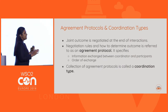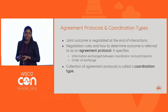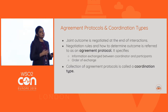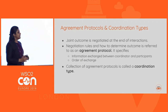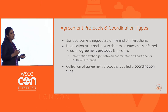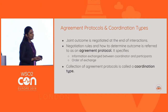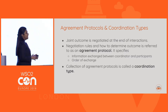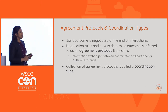After the initial registration, each microservice performs its intended business execution. At the end of all processing, they need to come together and decide the joint outcome — whether to commit or abort the transaction. There should be a set of negotiation rules to determine this output, which we call the agreement protocol. It contains the information exchange between coordinator and participants and the order of that exchange. A collection of such agreement protocols is referred to as a coordination type.